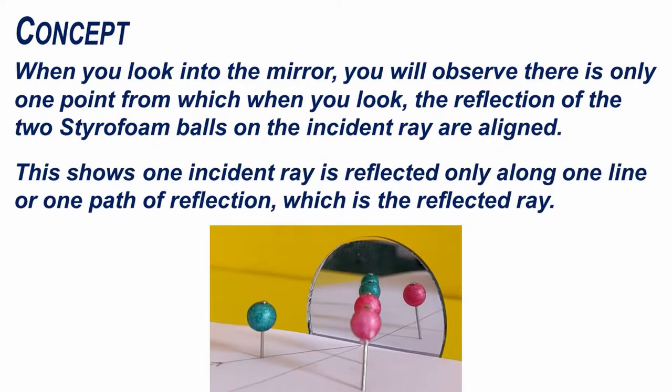When you look into the mirror, you will observe there is only one point from which when you look, the reflection of the two styrofoam balls on the incident ray are aligned. This shows one incident ray is reflected only along one line or one path of reflection, which is the reflected ray.